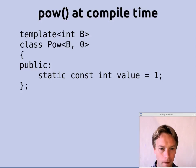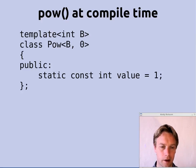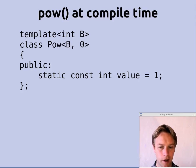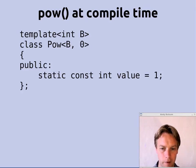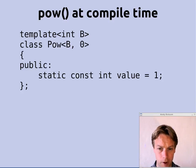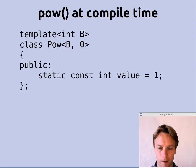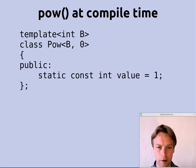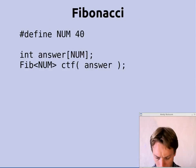How we stop is we specialize that class template by saying here's a version of pow for when e is 0. That first line, template<int b>, says we're still templated on b, but e is hard-coded to 0. At that point, the static const member variable is just hard-coded to 1. So the algorithm to calculate b to the e is: in most cases you do b times b to the e minus 1, but in the case where e is 0 you return 1. Between those two things, you get the answer you're looking for. Those two slides give you the whole definition of your first piece of template metaprogramming.